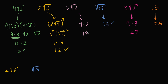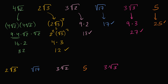Continuing: 18 corresponds to three square roots of two. Then the next square is 25, so the next value is five. Then 27, making three square roots of three the next largest. And finally, the largest square is 32, so four square roots of two is the greatest value.